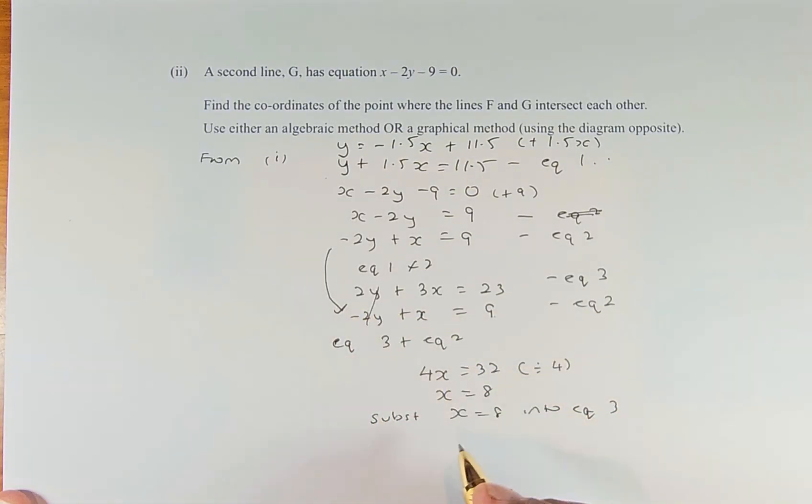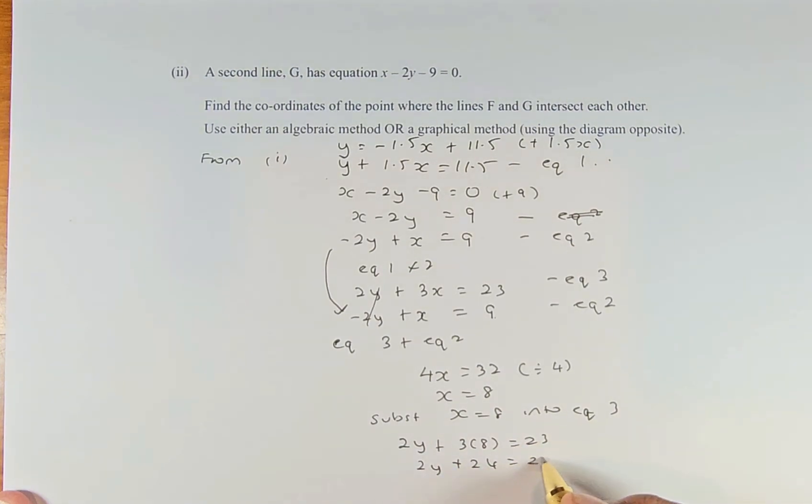That becomes 2y + 3x. Instead of x, we put 3 times 8 equals 23. So 2y + 24 = 23, and we subtract 24 from both sides.